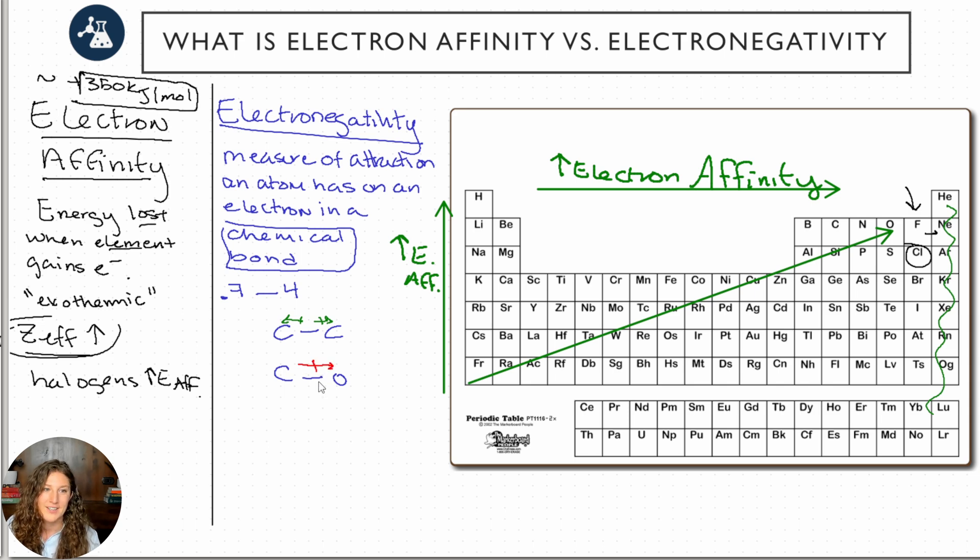Meaning the net result is that those electrons in those bonds are going to get pulled closer to the oxygen, resulting in a polar bond. We're going to talk about polarity in another video, but this is the root of polarities in organic chemistry, general chemistry, is this idea of electronegativity pulling on electrons in a chemical bond.